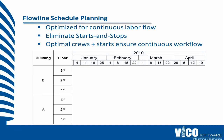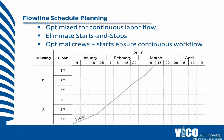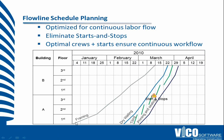We have the calendar along the top and instead of representing the Gantt chart bars as a list of activities, we are now showing the flow of work as these crews move from one location to the next. This is how we add a location breakdown structure to a schedule and see the flow of work through those locations over time.